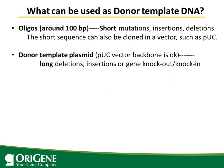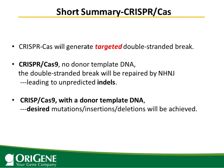What can be used as a donor template? If you want to introduce specific mutations, insertions, or deletions, you can use long oligonucleotides of around 100 base pairs. These short sequences can also be cloned into a vector such as a pUC vector. If you want to do long deletions, insertions, or gene knockout and knock-in, you will need to clone the template into a plasmid vector — a pUC vector works fine.